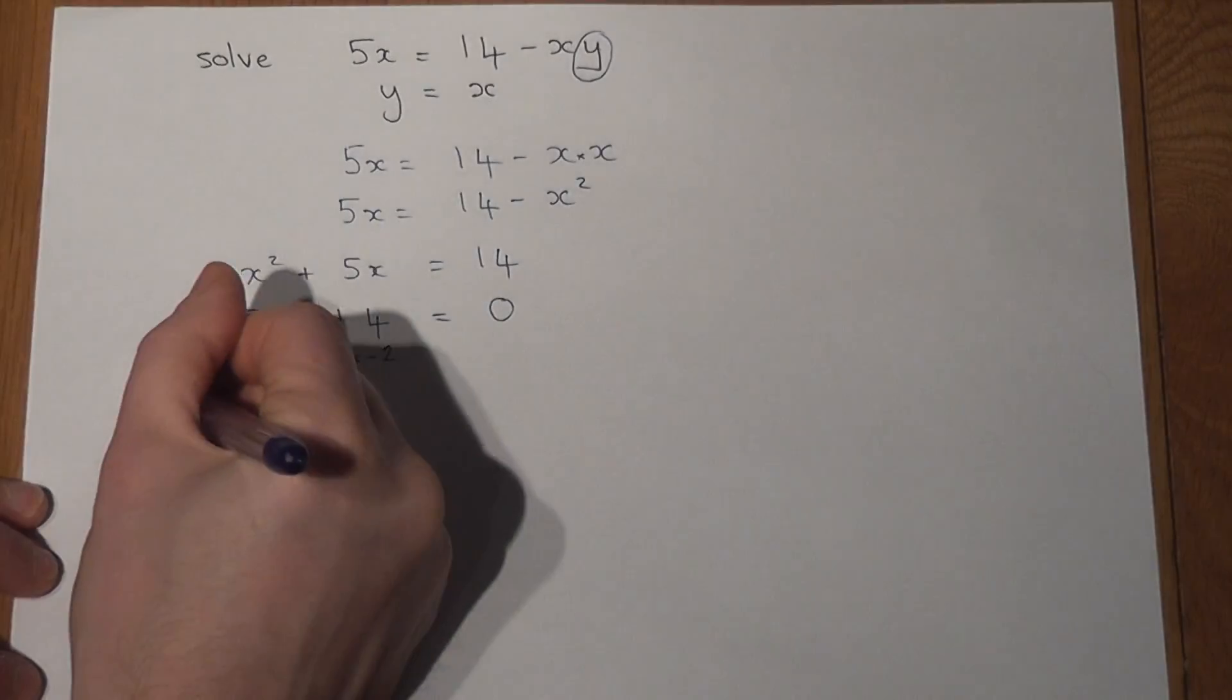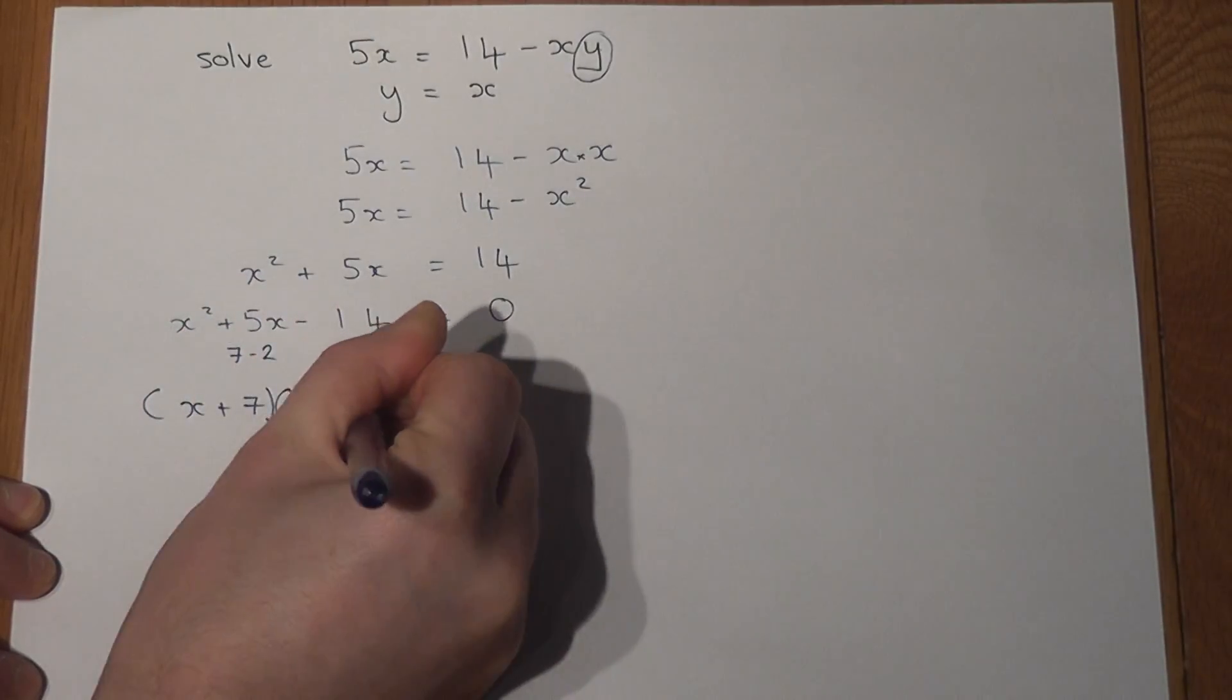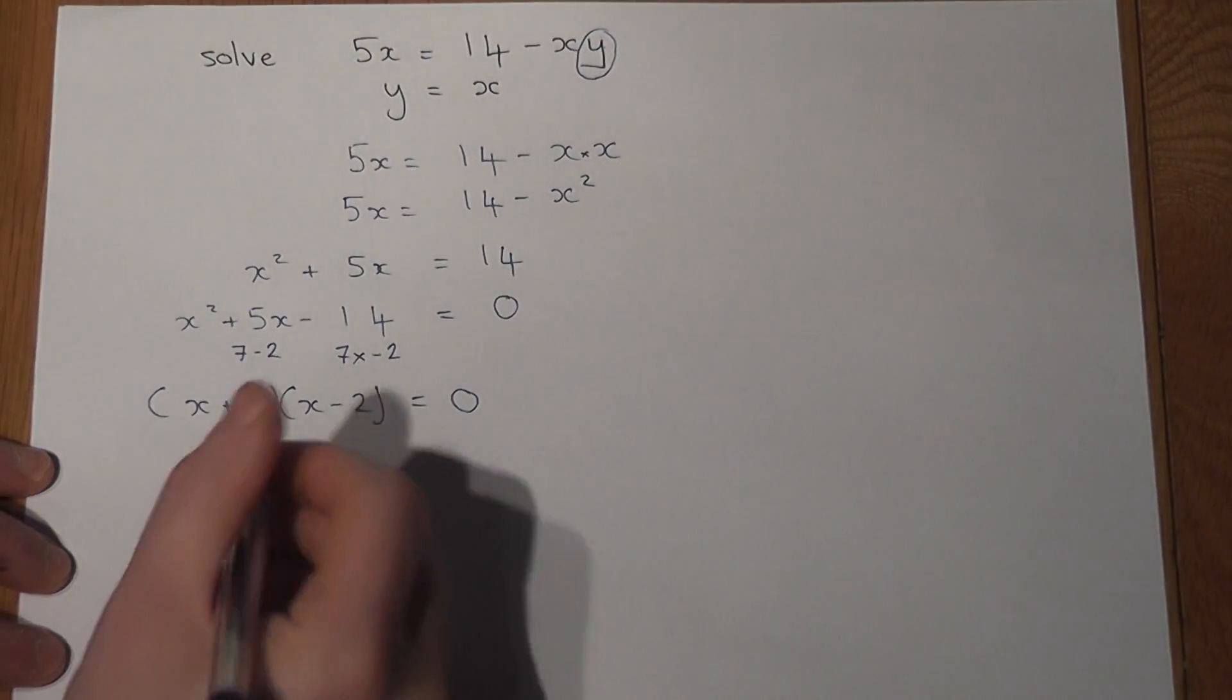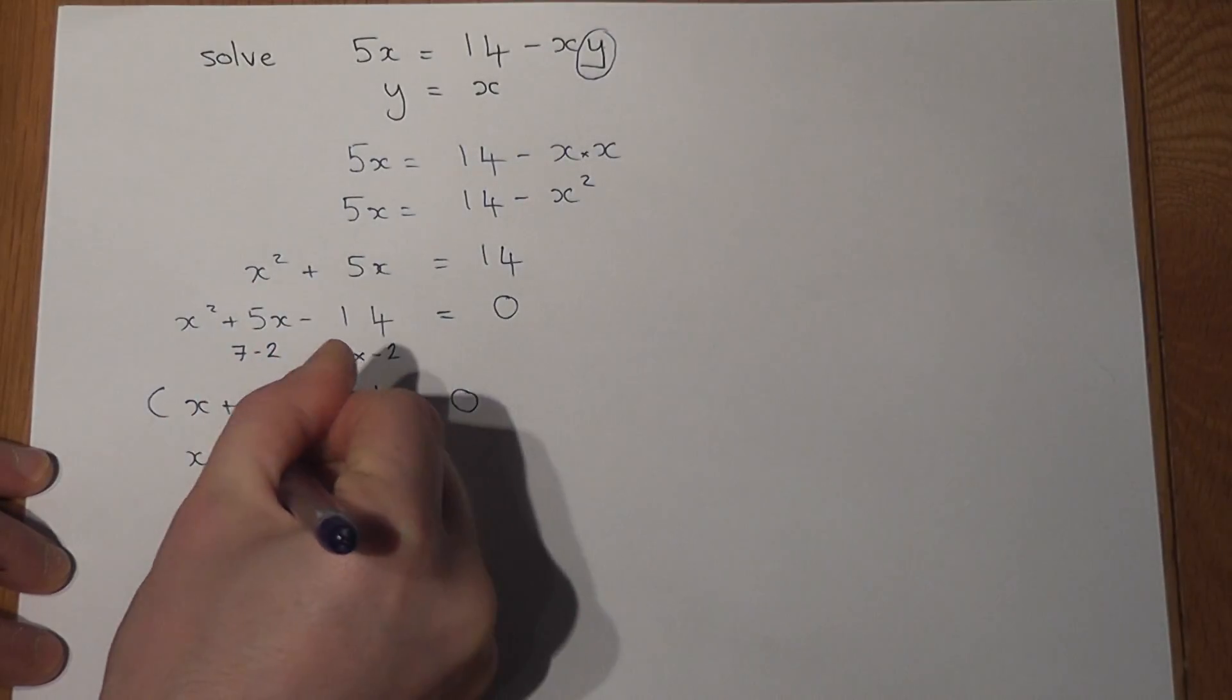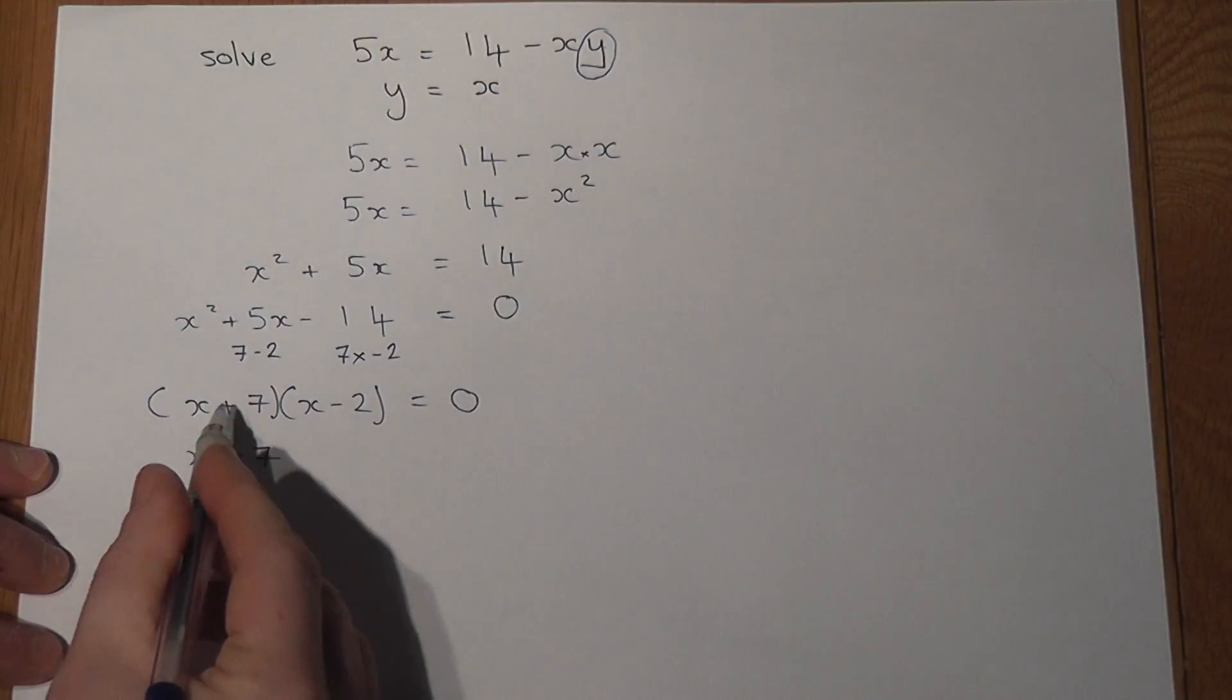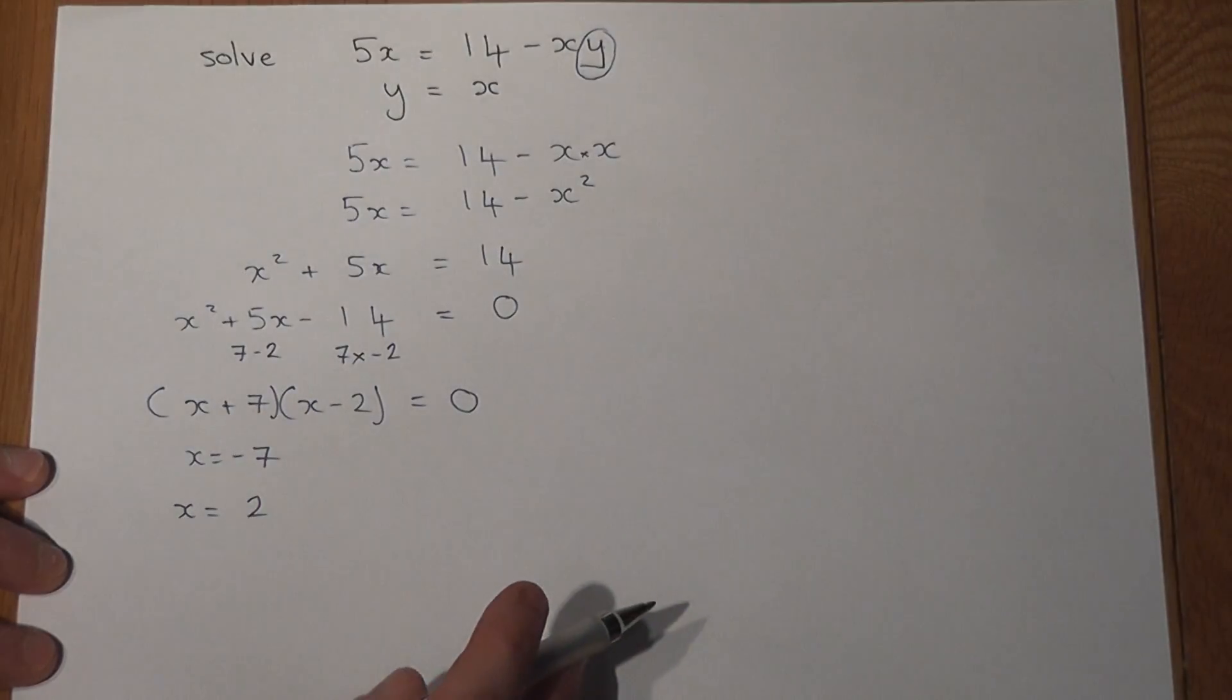So this becomes x plus 7 times x take away 2 equals 0. And the trick when you factorize is the solutions are x equal to minus 7 or x is equal to positive 2. Because minus 7 plus 7 is 0 and 2 take away 2 is 0.